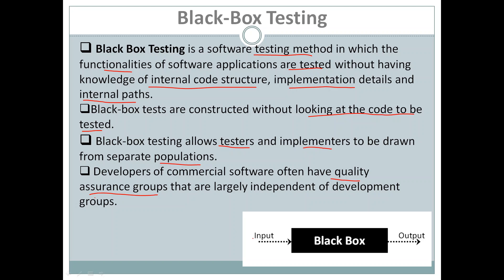Looking at the diagram, it explains black box testing where the tester only concentrates on the input or set of inputs and the output generated by the code. The internal structure of the code is not known to the tester, and that is why it is called black box testing — the internal details are not known.